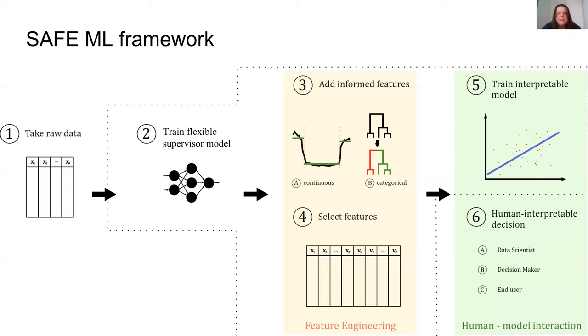The method can be described in six steps. The first one is to provide a raw tabular dataset. The second step is training a supervisor complex machine learning model on the provided data. This model does not need to be interpretable, it just needs to be accurate.